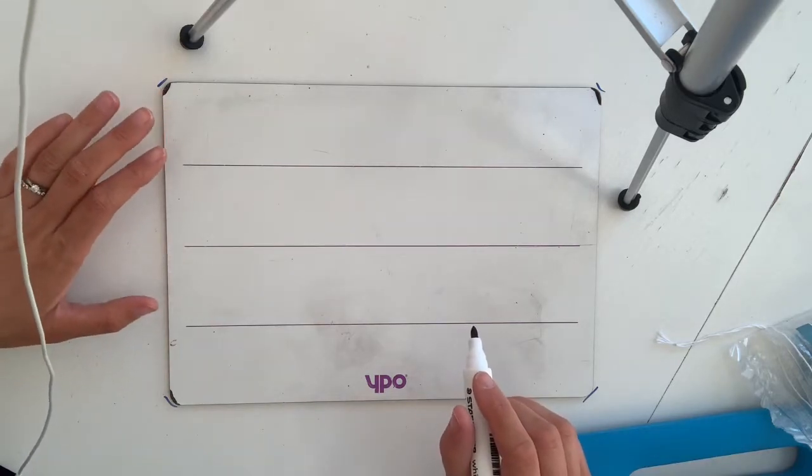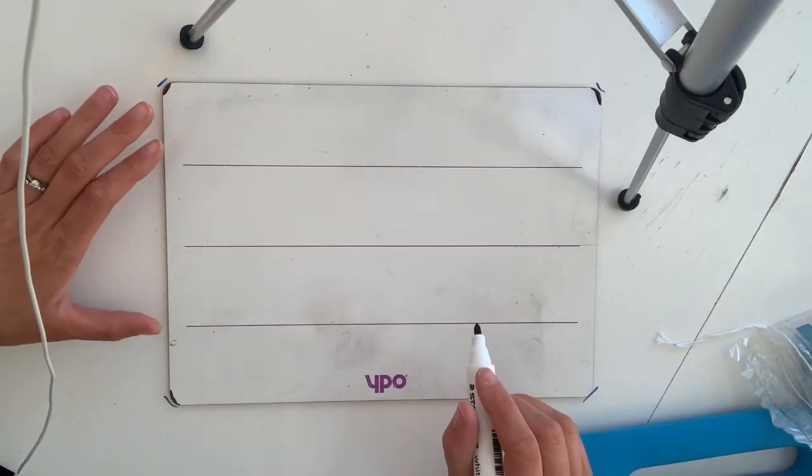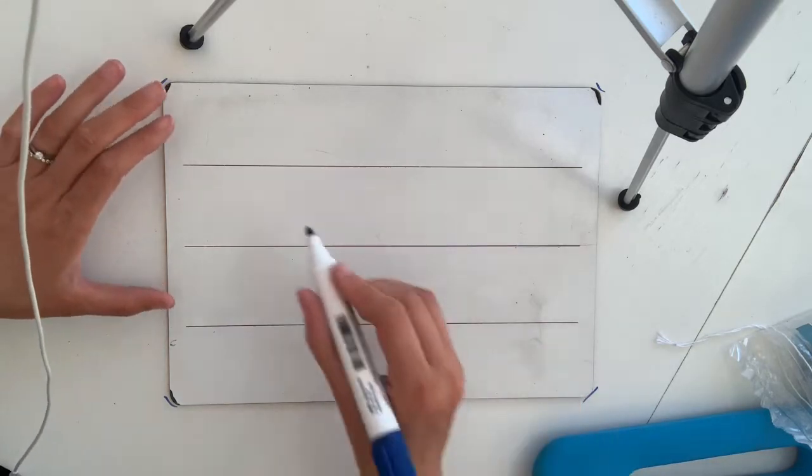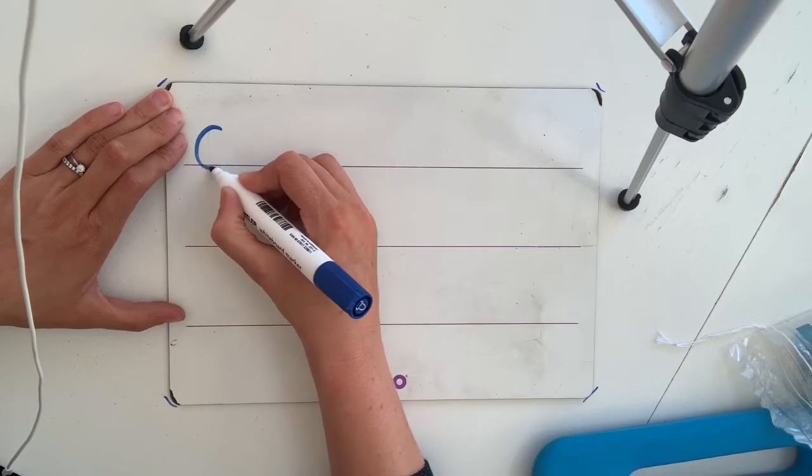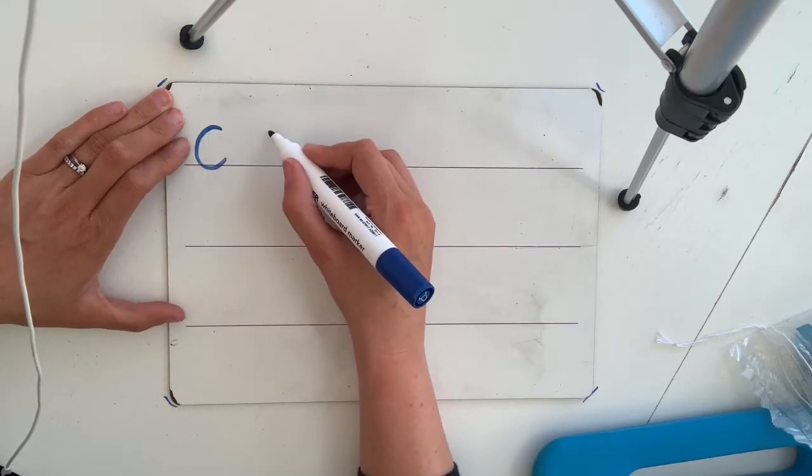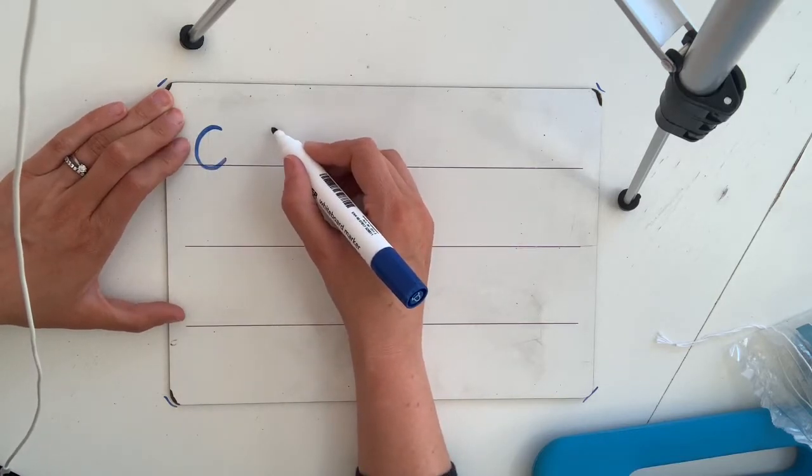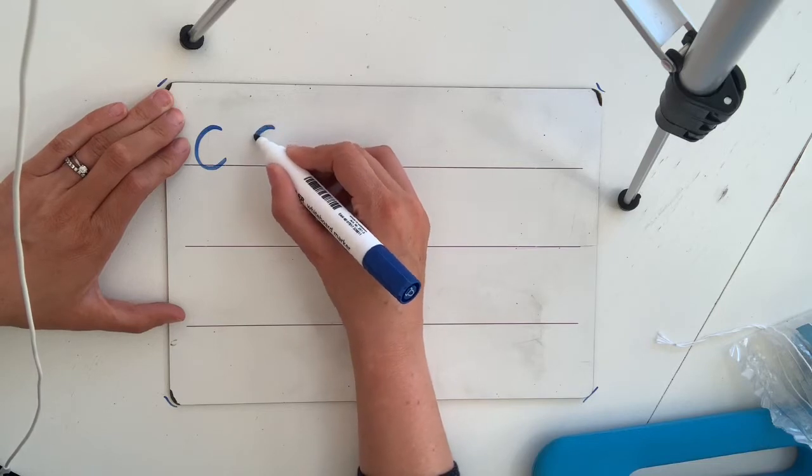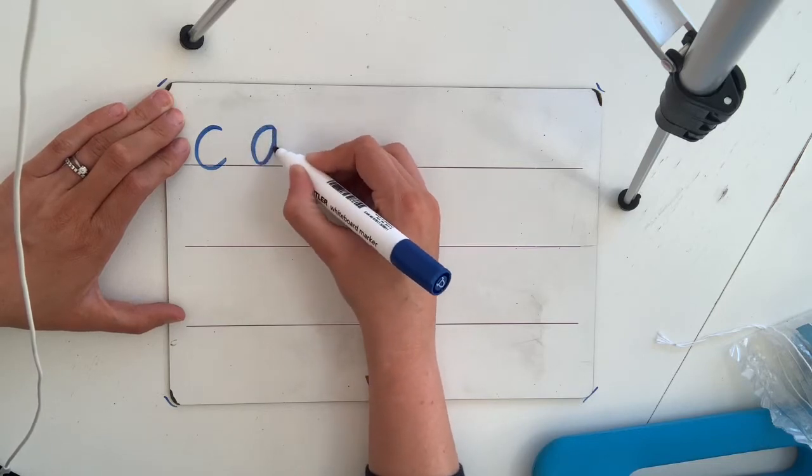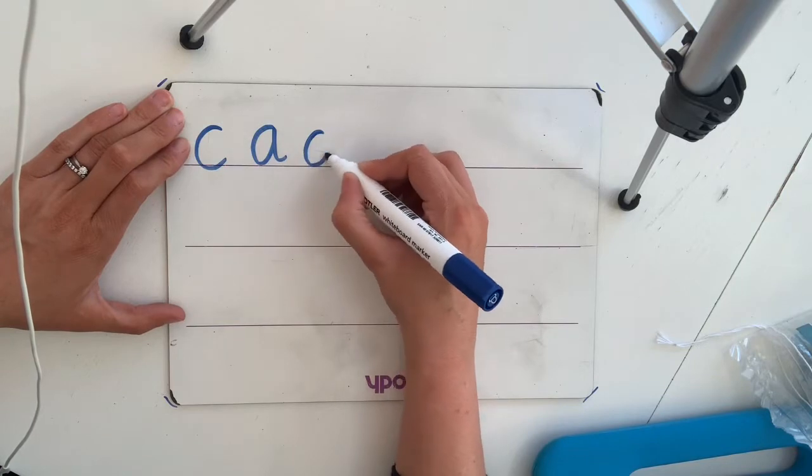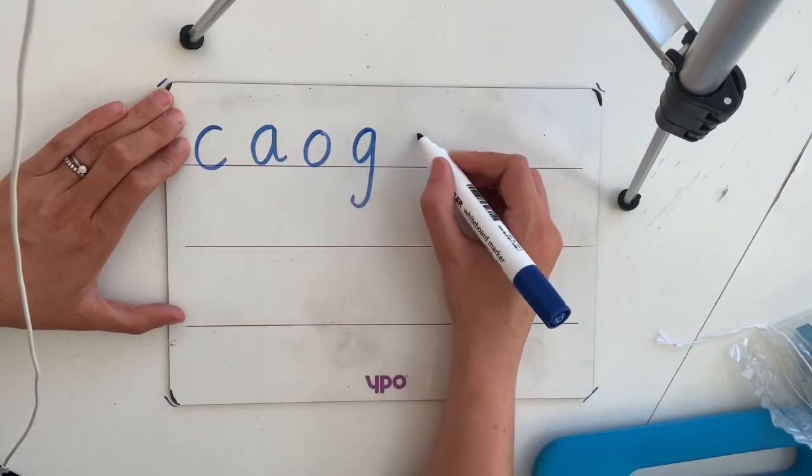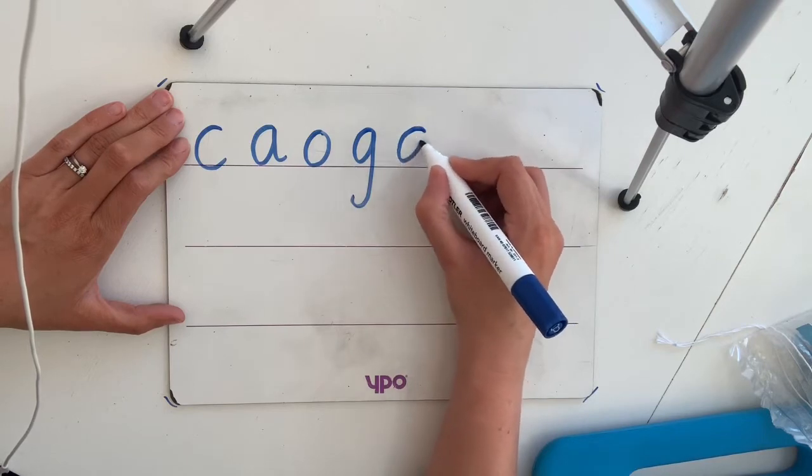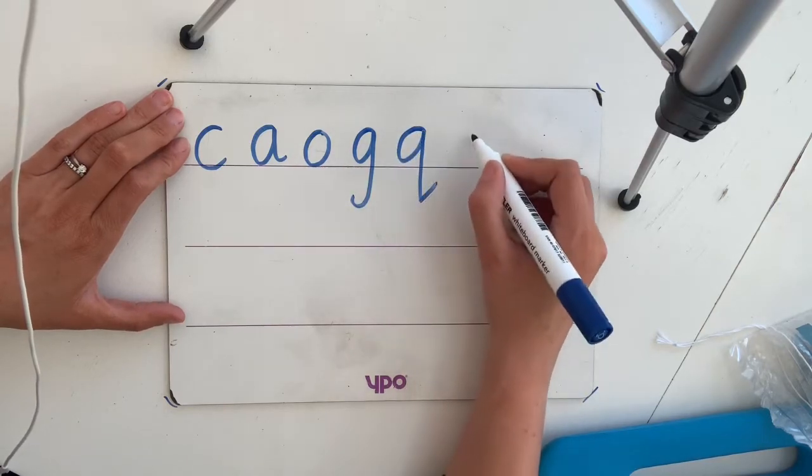Okay so we're going to just quickly recap the curly caterpillar letters that we've already done. Remember if you can form that shape you can form all the other letters quite easily. A, R, G, Q, D.